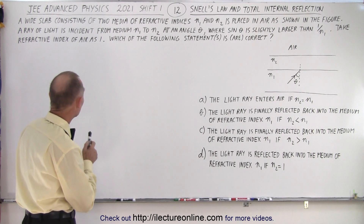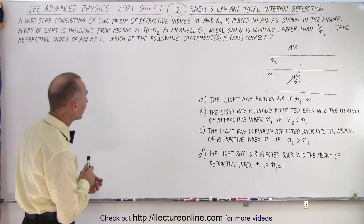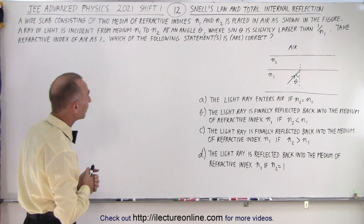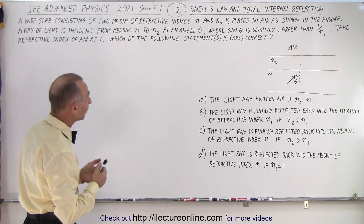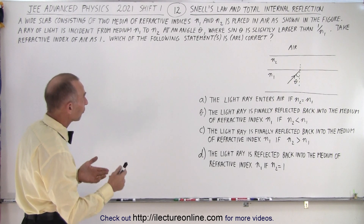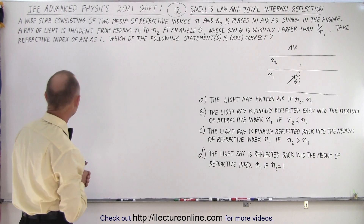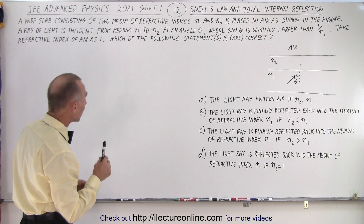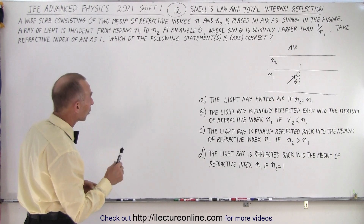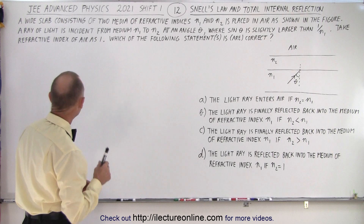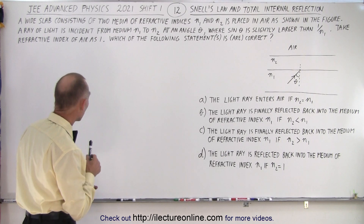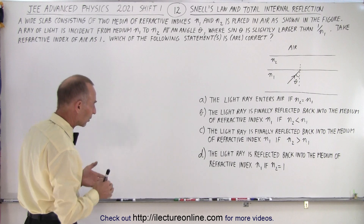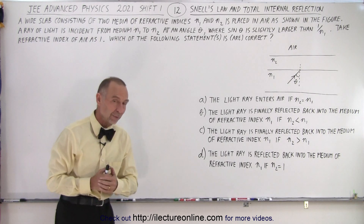A wide slab consists of two media of refractive indices N1 and N2, and they were nice enough to give us a little diagram. They're placed in air as shown in the figure, so above that we have air. A ray of light is incident from medium N1 to N2 at an angle theta, where sine theta is slightly larger than 1 over N1. Take the refractive index of air as 1. Which of the following statements is or are correct? It could be anywhere from 1 to 4 statements being correct.